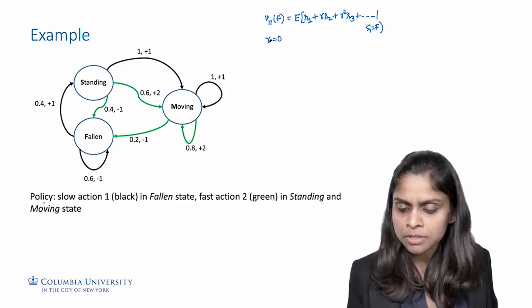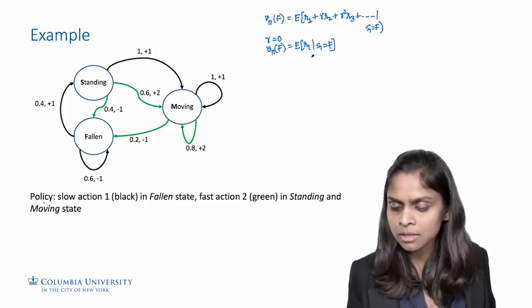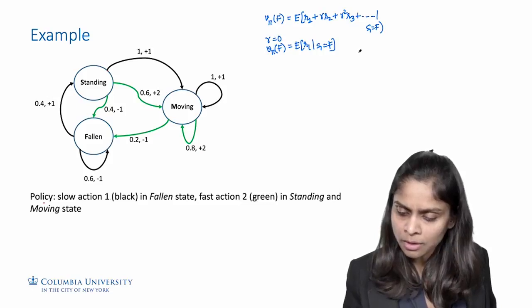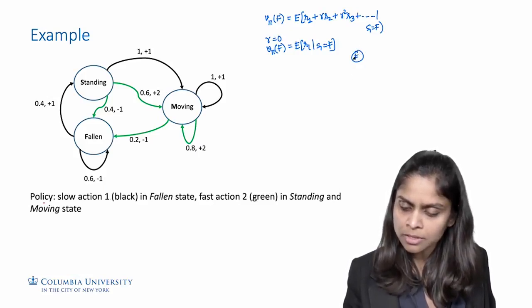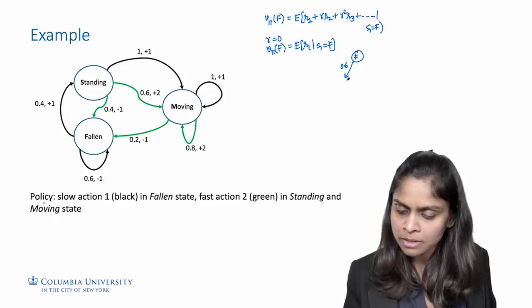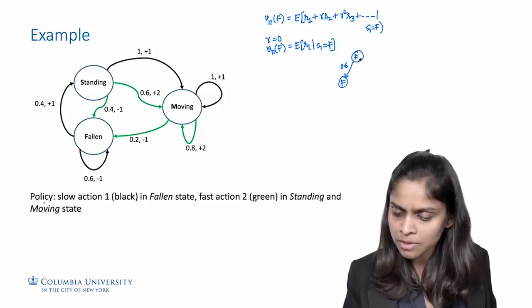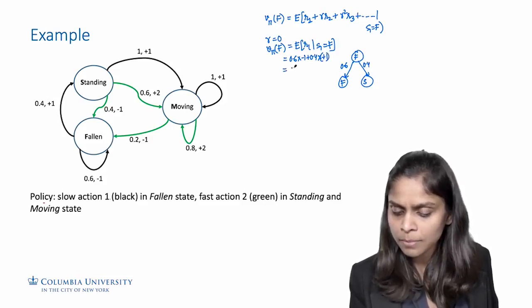For starters, let's take gamma equals 0, so that the value of the policy starting in state f is simply the expected immediate reward given that the starting state is the fallen state f. To compute the immediate reward, from the fallen state the policy says to take the slow action. With 0.6 probability the next state is again the fallen state and the reward is minus 1; with 0.4 probability the next state is the standing state and the reward is plus 1. So the expected immediate reward is 0.6 times minus 1 plus 0.4 times plus 1, which is minus 0.2.